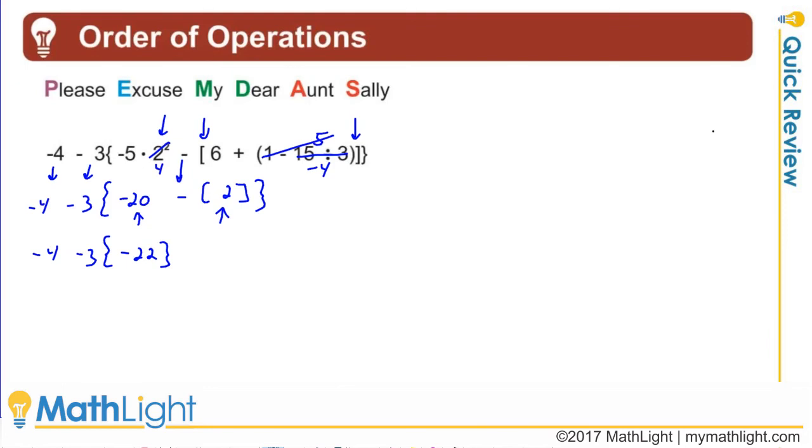Now again, order of operations, there are no exponents. So I'm looking for multiplication or division. So I'm going to do this multiplication. Negative 3 times a negative 22 is a positive 66. And I still have this negative 4 in front.